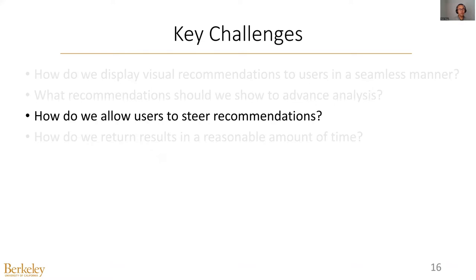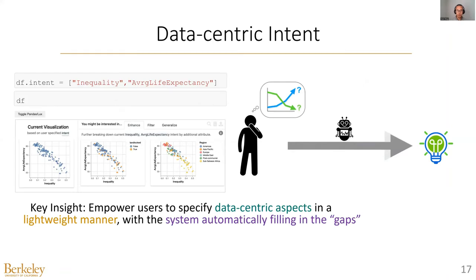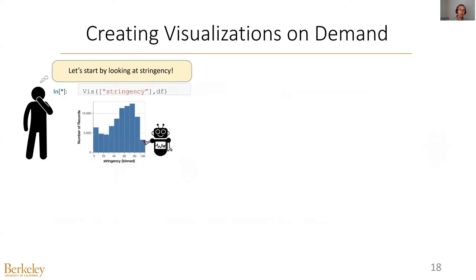Next, we consider how to allow users to steer their recommendations. The core idea is to allow users to express their data-centric intent, and LOCKS is responsible for inferring the visualization encodings and other details. For example, a user interested in the relationship between two attributes — inequality and average life expectancy — and LOCKS is able to automatically pick the scatter plot and other appropriate encodings based on existing best practices. Users are able to express their intent not just in attributes but also in filters. Using the same intent language, users are able to create visualizations on demand.